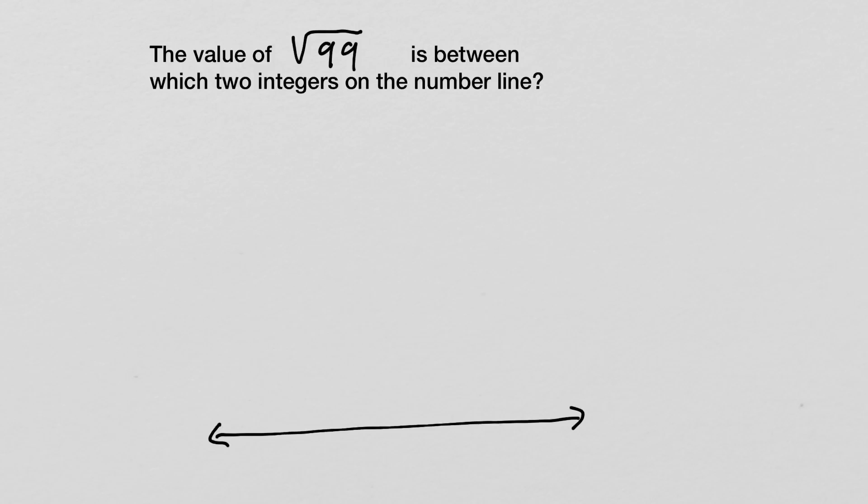This is another great example of a question that you won't be able to use your calculator on on your final exam. We're asked to find the value of the square root of 99 and plot it on a number line, or at least find which two integers it falls between.